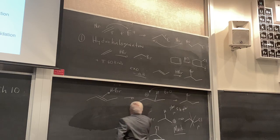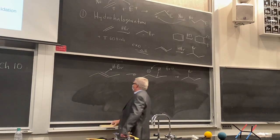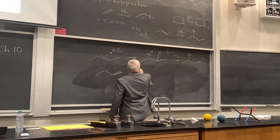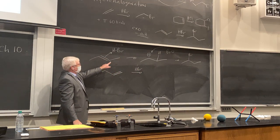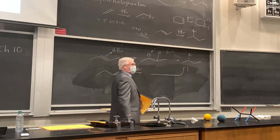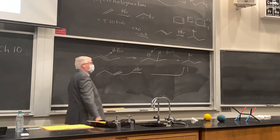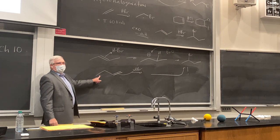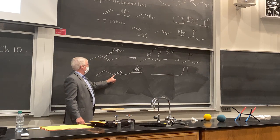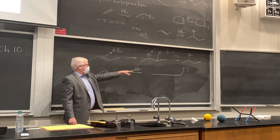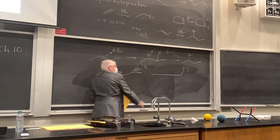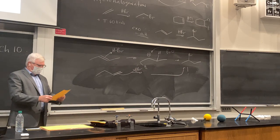1-butene also gives 2-bromobutane — the same product as 2-butene — because we protonate the end carbon, generating the same secondary carbocation intermediate. With 2-butene it's symmetric, so we always get secondary. With 1-butene, we invoke Markovnikov selectivity — put the proton on the end — and go through the same intermediate. So both substrates converge to the same product.